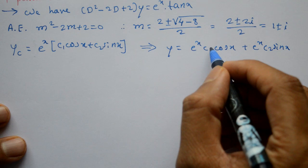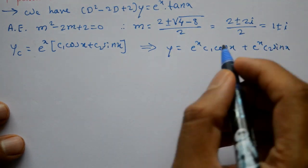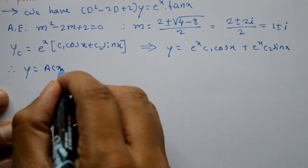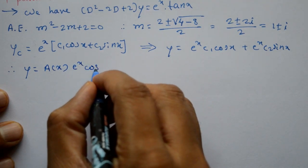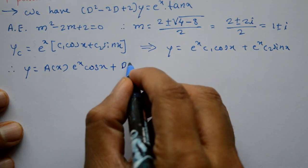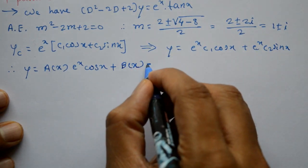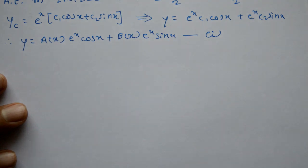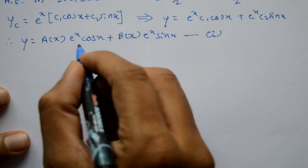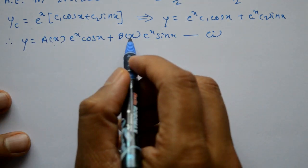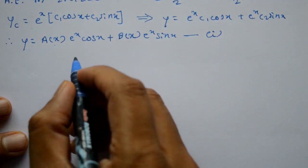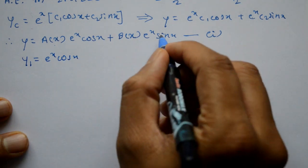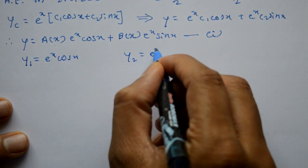We can write y equals e^x·c1·cos x plus e^x·c2·sin x. For variation of parameters, we replace c1 with a(x) and c2 with b(x). So y equals a(x)·e^x·cos x plus b(x)·e^x·sin x — call this equation number one. Let y1 equals e^x·cos x and y2 equals e^x·sin x.